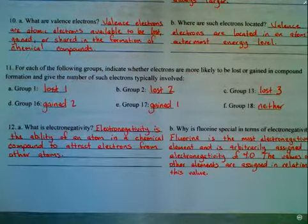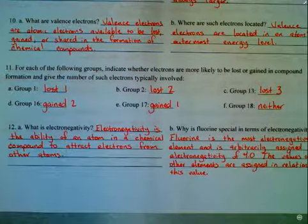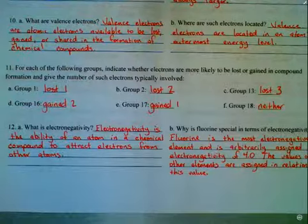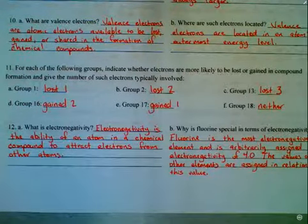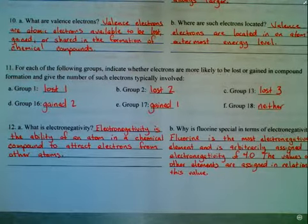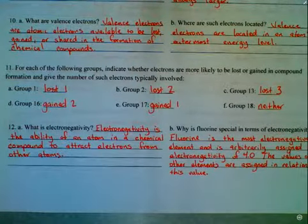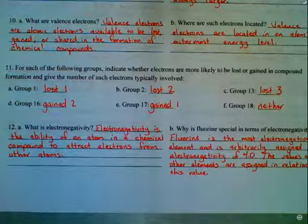Part F, Group 18, however. Group 18 is going to do neither. It is going to not lose electrons, and it's not going to gain electrons because it's already obtained a full octet. It's already got a full, stable electron configuration. And yes, these are the noble gases over there in Group 18. We'll see you next time.